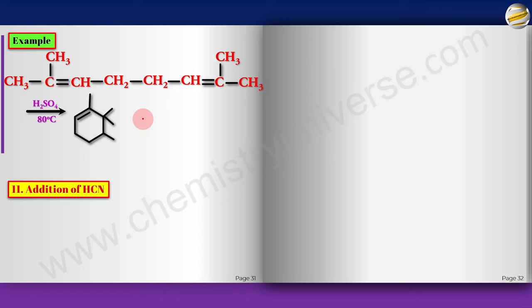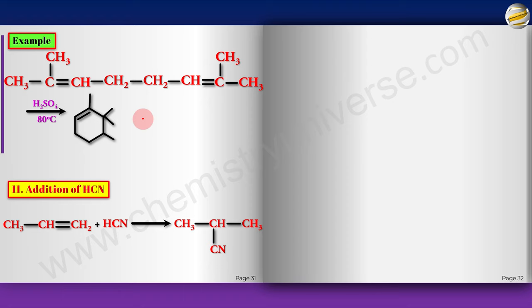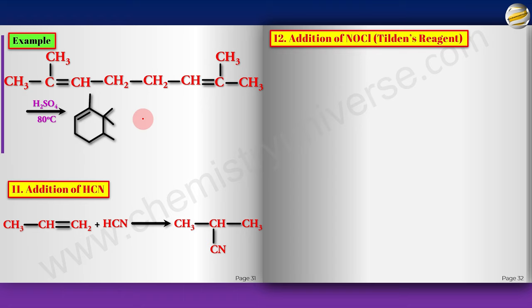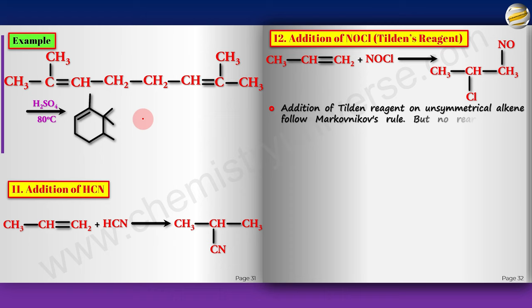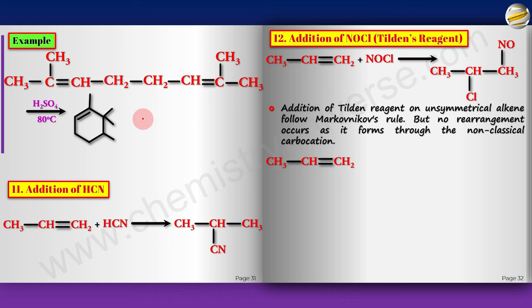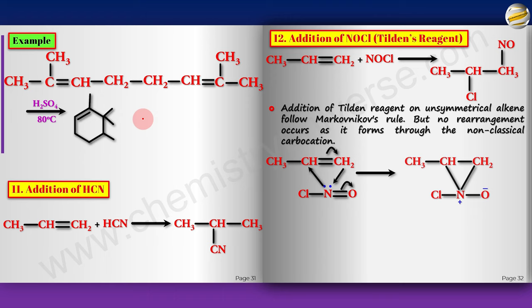Addition of HCN is similar — Markovnikov addition. Pause and make the product; obviously the Markovnikov product is obtained. Then addition of NOCl — Tilden's reagent. Remember it is NO+ and Cl−. The mechanism: pi bond goes to carbon, carbon attacks nitrogen, pi bond goes to O, but nitrogen has a lone pair so it attacks the carbon back, forming a three-membered ring with positive charge. Then Cl− attacks with SN2/SN1 character to give the Markovnikov product. No rearrangement occurs as it proceeds through a non-classical carbocation.